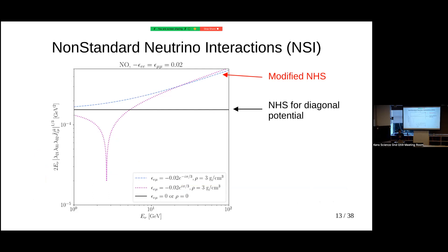This slide illustrates: setting the diagonal NSI to some value and turning on off-diagonal terms. The black line has zero off-diagonal — the NHS identity holds for diagonal potential, indistinguishable from no NSI. But turning on off-diagonal terms reveals deviations. The diagonal case is indistinguishable from vacuum in this observable, but off-diagonal NSI produces clear deviations. This holds even for non-trivial matter profiles, such as Earth-crossing neutrinos with varying density: you can still see the deviation from the standard scenario.